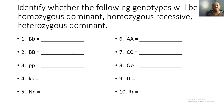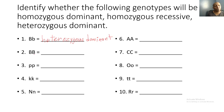Let's identify whether the following genotypes are homozygous dominant, homozygous recessive, or heterozygous dominant. For the first one, we have a capital B and a lowercase b. Since they are different, it's heterozygous. And since that capital B covers up or masks that lowercase b, it's heterozygous dominant.